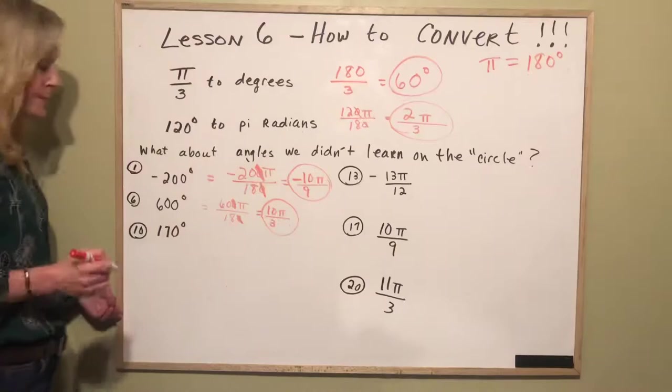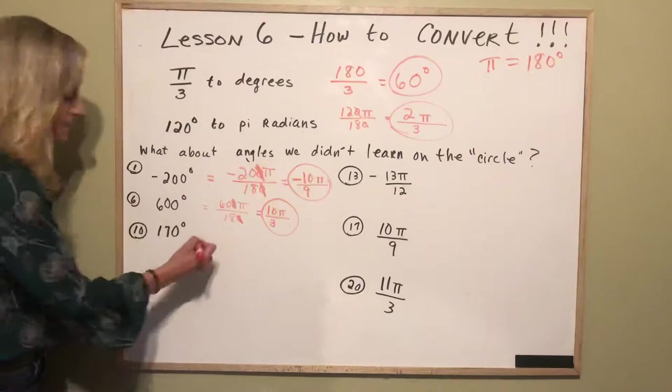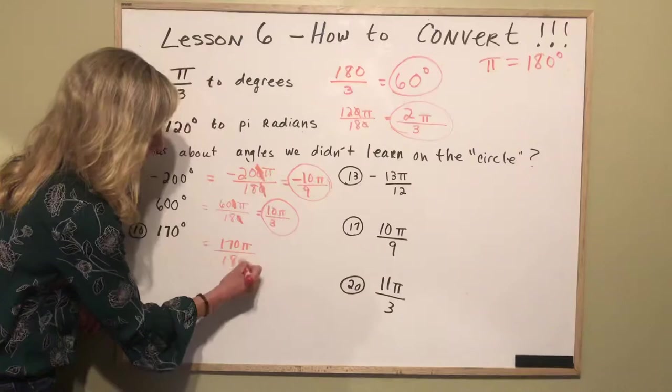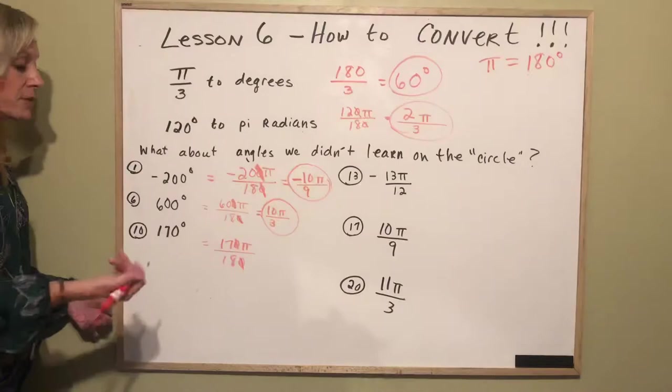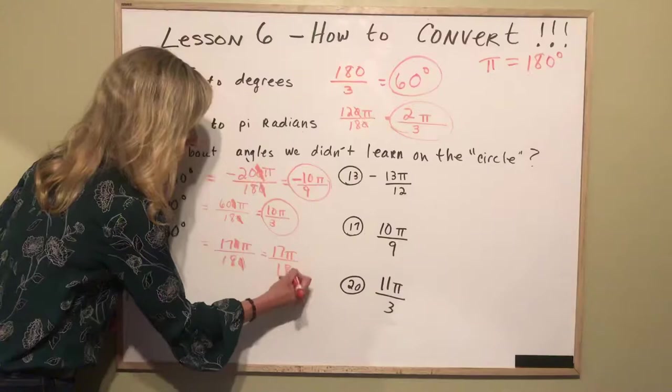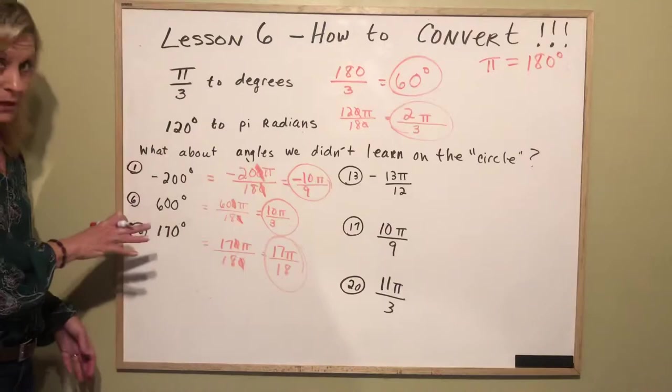So 170 degrees, this is your number 10. You just go 170 times pi over 180. Cancel the zeros. Nothing other than 1 divides both 17 and 18 so the answer to this is 17 pi over 18 and that's your answer. Okay so the first 10 are like that.